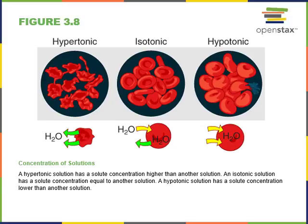If we place a cell in a hypertonic solution — a solution with a higher concentration of solutes than the cytosol — water will move out of the cell from the cytosol into the extracellular fluid, causing the cell to shrink.